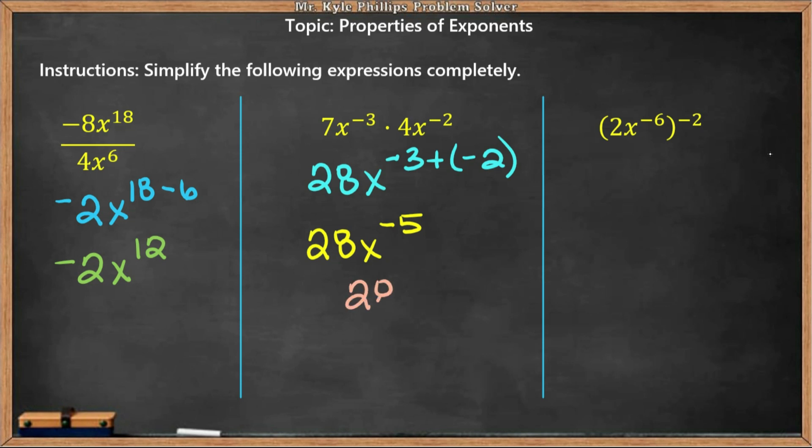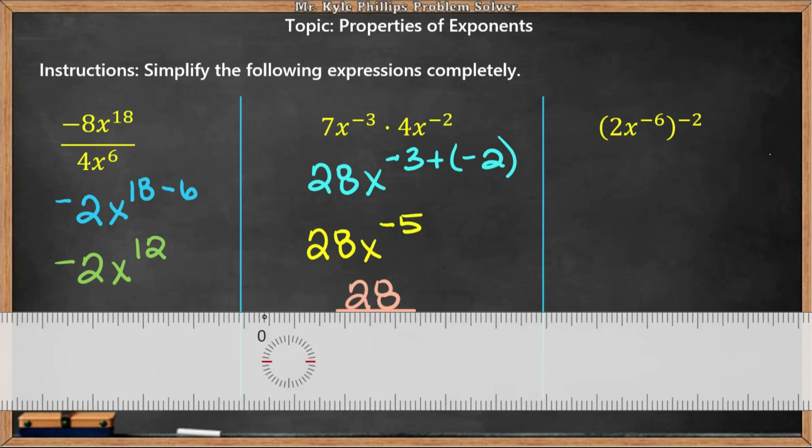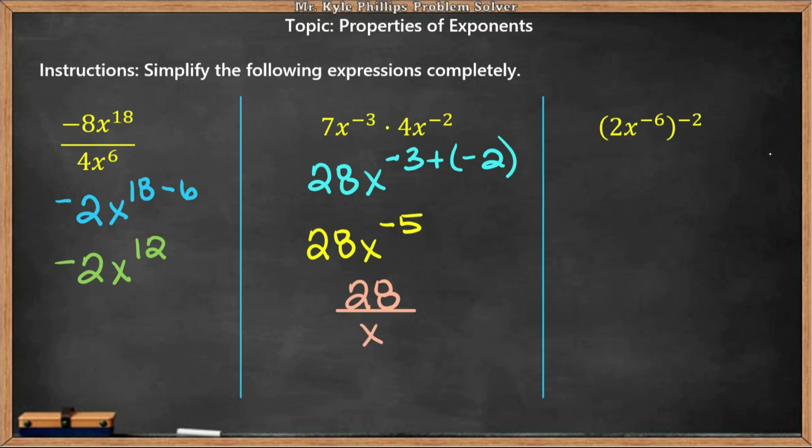If it were in the denominator, we would move it to the numerator. So our solution here is going to be 28 over x to the 5th.